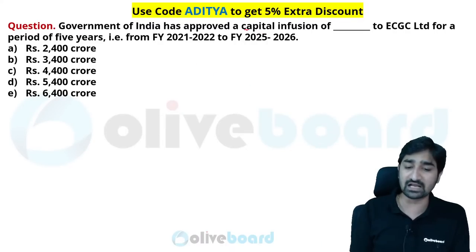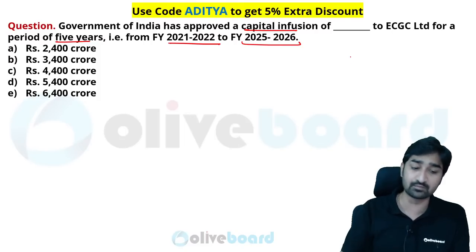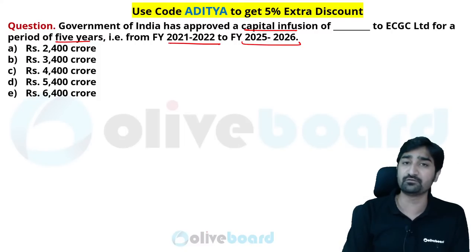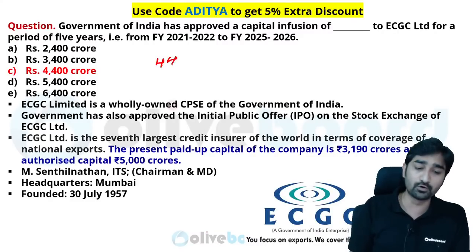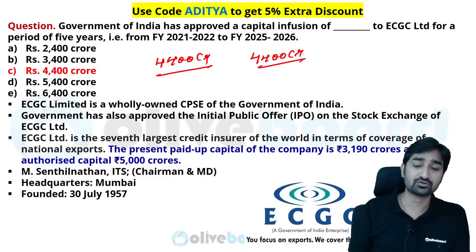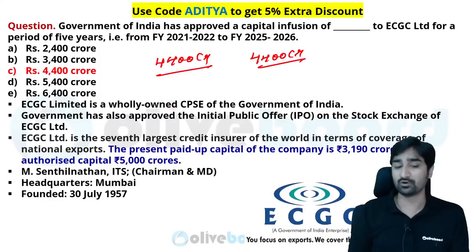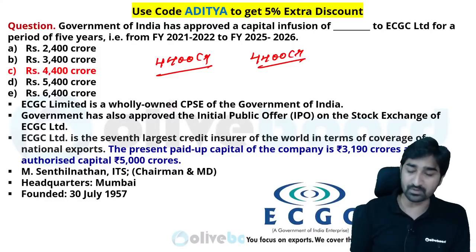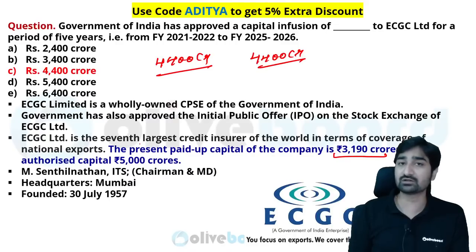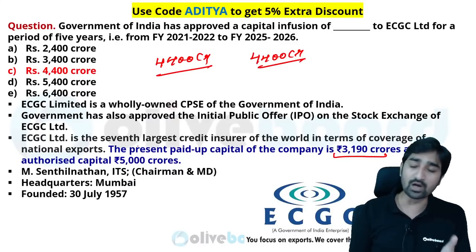The Government of India approved a capital infusion of 4,400 crore rupees for ECGC Limited for the duration of 5 years starting from 2021-22 to 2025-26. The correct answer is 4,400 crore. This company has also received approval to get listed via IPO on the stock market. The paid-up capital of the company is approximately 3,200 crore rupees.